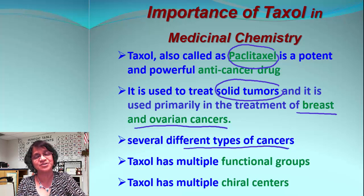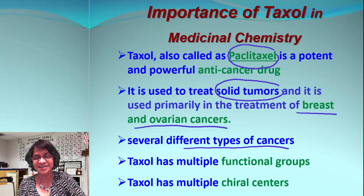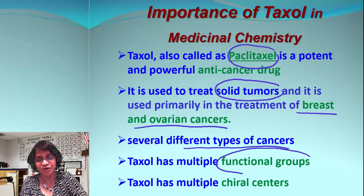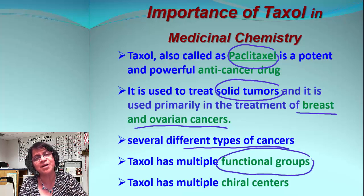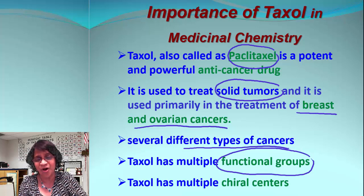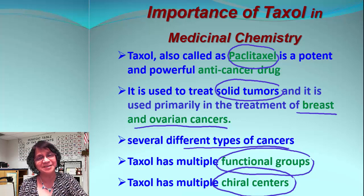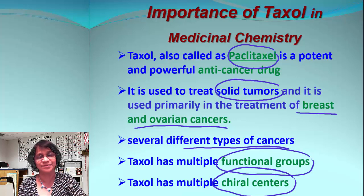Going back to the structure of Taxol, what are the unique features that make it a good, important medicinal drug? One key aspect is functional groups. Taxol has multiple functional groups, and we will identify those groups. Taxol also has multiple chiral centers, and that makes it unique. Because of multiple chiral centers, synthesis of Taxol is problematic, and we will talk about that later in a different video.